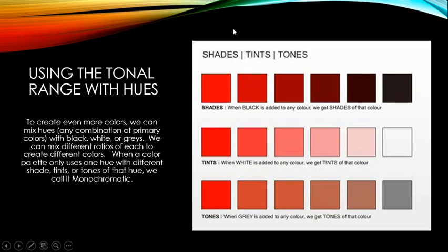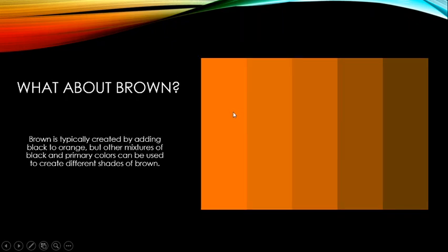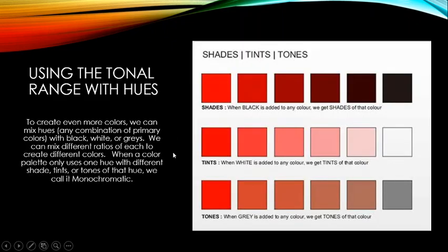When we add black to a hue we call the results shades — a little black makes it darker, more black makes it darker still. When we add white to a color we call it a tint, also known as pastels — hues mixed with white that give a lighter, softer feeling.